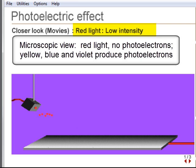A microscopic view shows for each color the effect of frequency and intensity. A higher intensity means more photons, and more photoelectrons are produced.